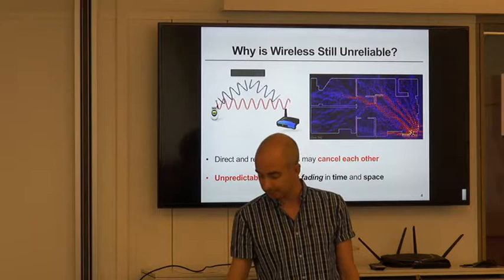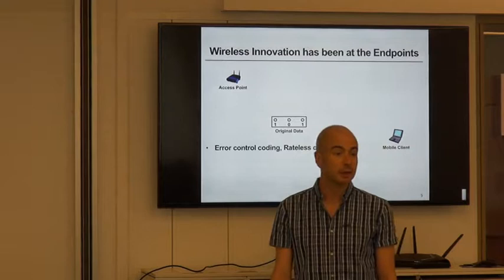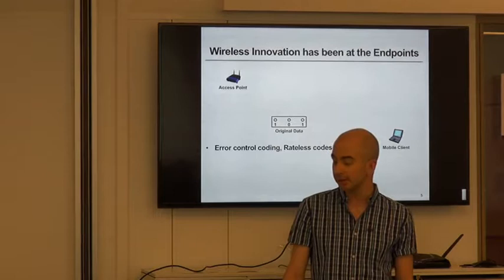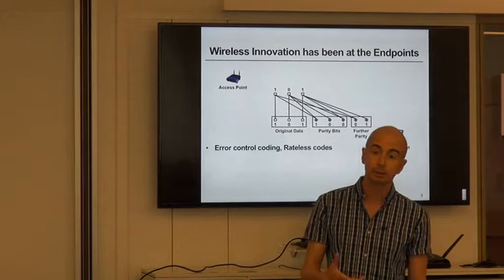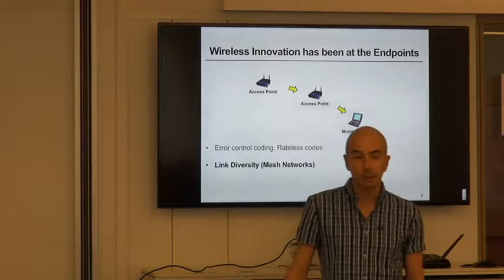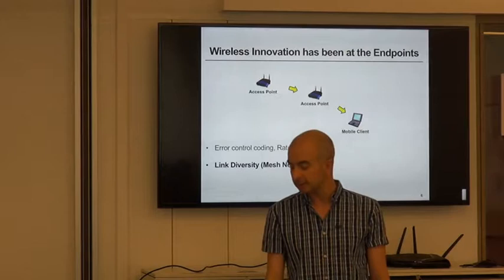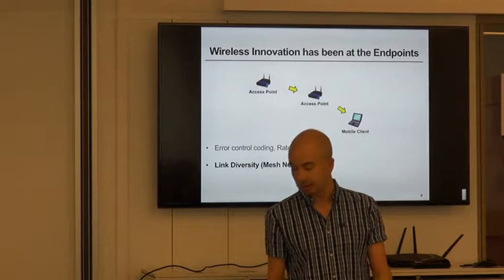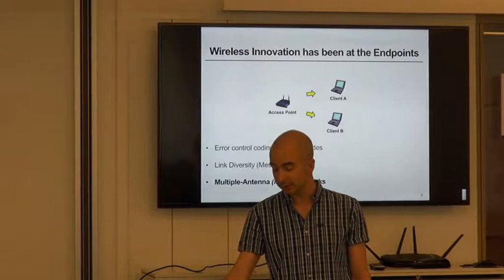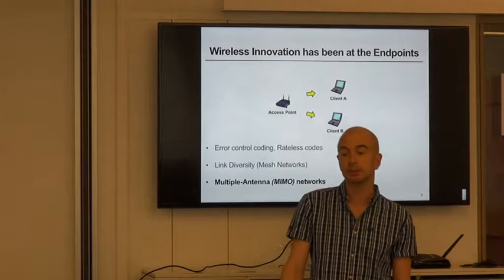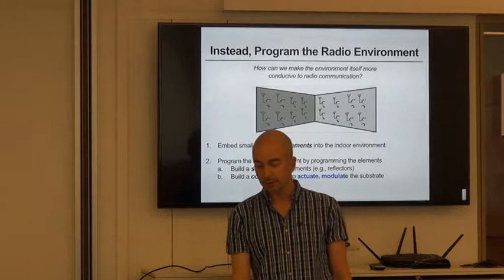The result is what we call multipath wireless multipath fading, very unpredictable in both time and space. The observation of this work is that most of the wireless innovation so far has been at the endpoints themselves, the mobiles and the access points. For example, there's been a lot of work on error control coding, where we're taking the original data and adding parity bits to improve reliability. There's been work on diversity using different links, different access points to make wireless more reliable. Mesh networks are examples of this.